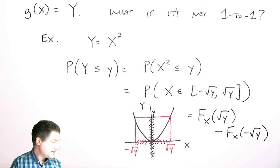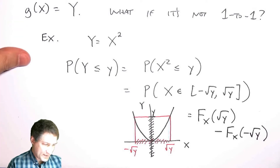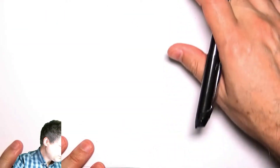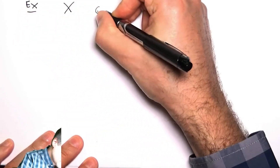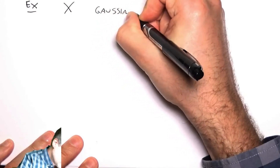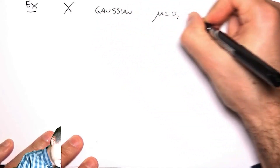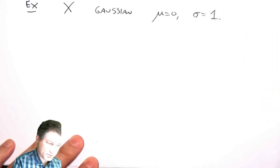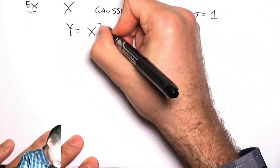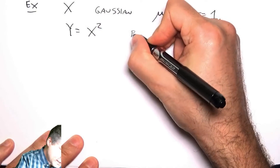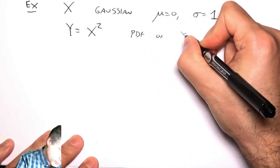Things get a little complicated, but we can take the derivative to find the PDF. Let's do a concrete example with a Gaussian: suppose x is Gaussian with mean zero and sigma one — our standard normal random variable — and y equals x squared. What is the PDF of y?